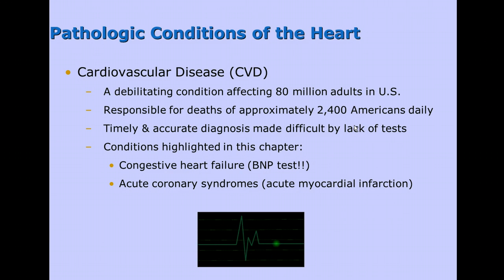We're going to go over a couple of pathological conditions of the heart, or different types of heart disease. The first one is cardiovascular disease, sometimes called CVD. This is a very debilitating condition affecting 80 million adults in the United States. It's responsible for the deaths of approximately 2,400 Americans daily.